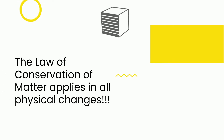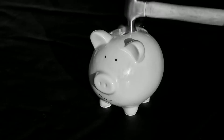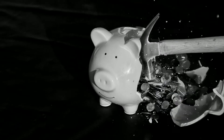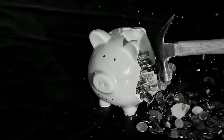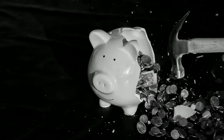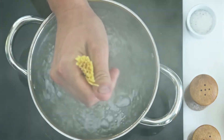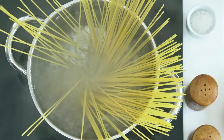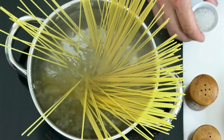The law applies during all physical changes. When this piggy bank breaks, you can measure the mass before and after, and it will be the same. As water evaporates, which is a phase change, the molecules remain the same but are just moving further apart, and the mass again remains the same.